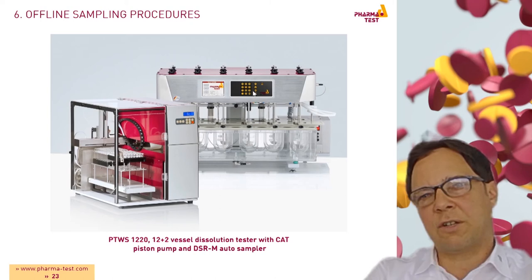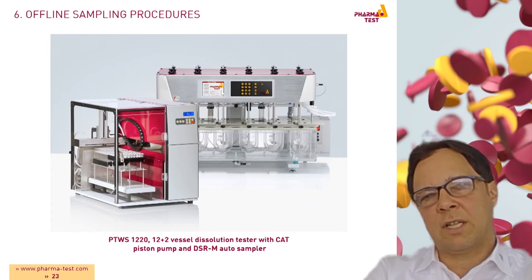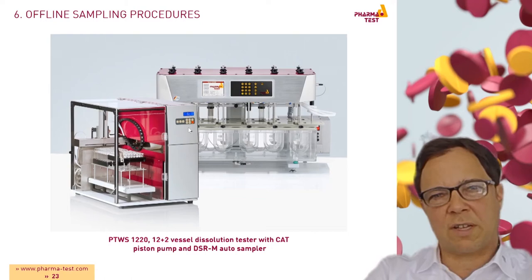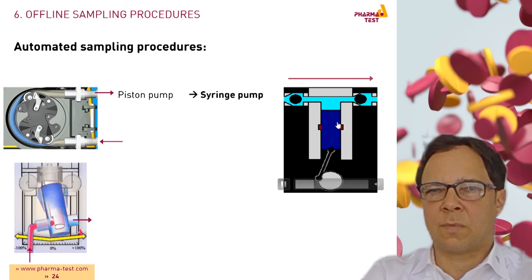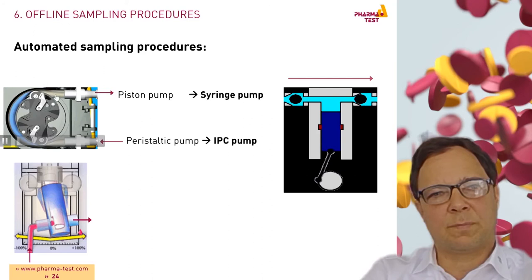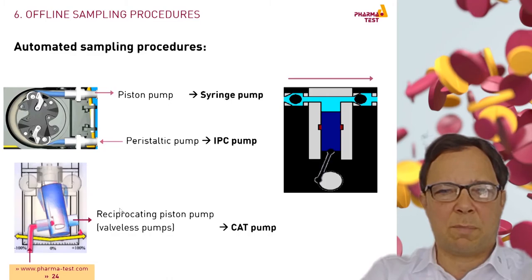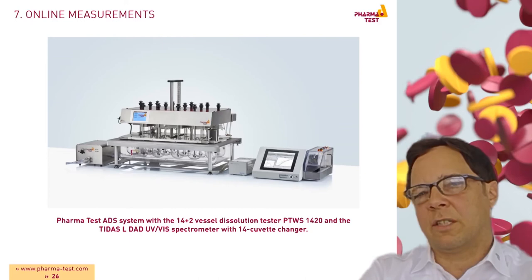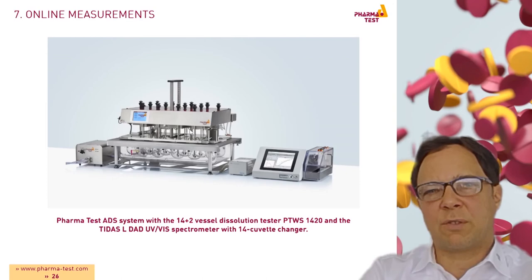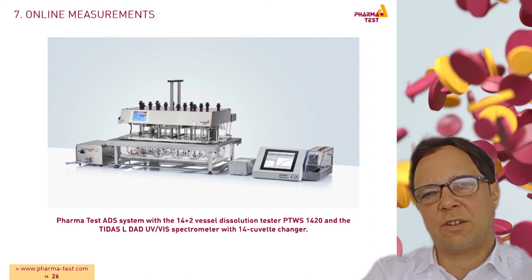On this picture we see the PharmaTest PDWS 1220 12-position dissolution bath and the sampling robot DSR which uses high-precision piston pumps. On this slide different pump types are shown. We have the principle of the syringe pump, then the peristaltic pump, and also the high-precision piston pump. The sampling from the dispersion releaser can also be done in an online mode. We see here the PTWS 1420 which is a 14-vessel dissolution tester, and the pump and the TDAS-L diode array spectrometer with a 14-cell changer.